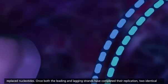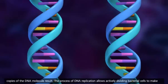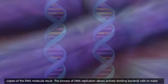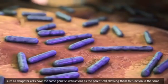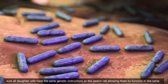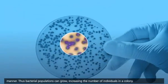Once both the leading and lagging strands have completed their replication, two identical copies of the DNA molecule result. The process of DNA replication allows actively dividing bacterial cells to make sure all daughter cells have the same genetic instructions as the parent cell, allowing them to function in the same manner. Thus, bacterial populations can grow, increasing the number of individuals in a colony.